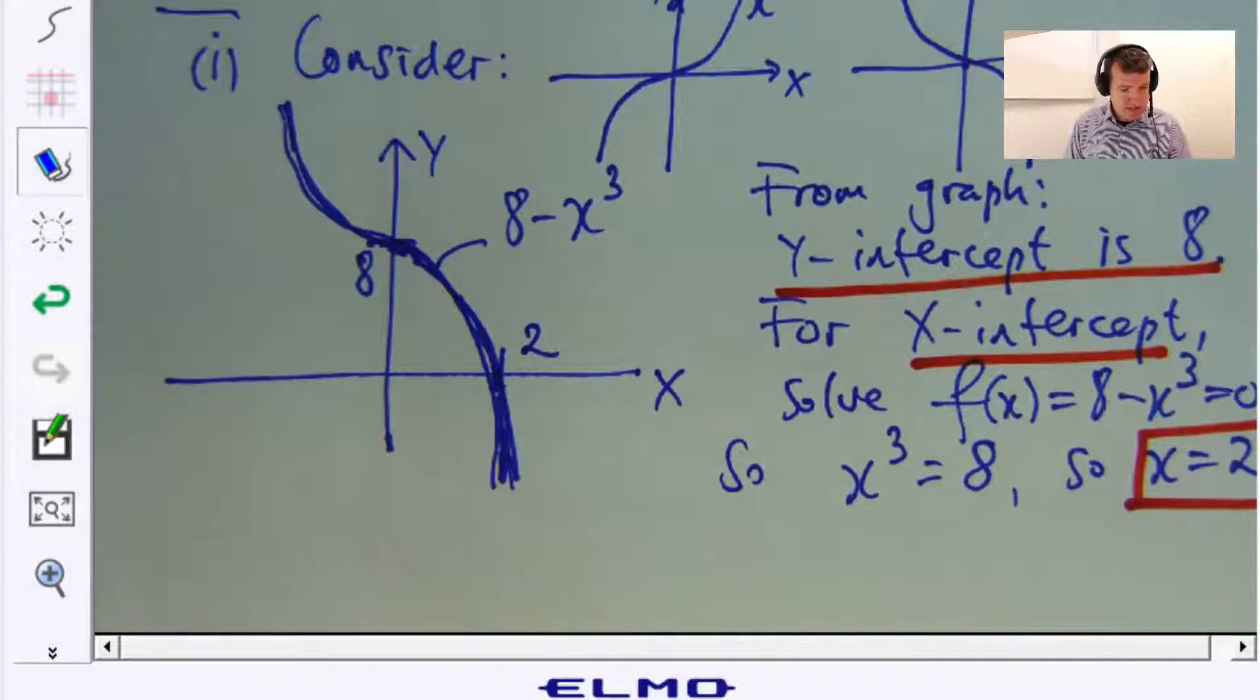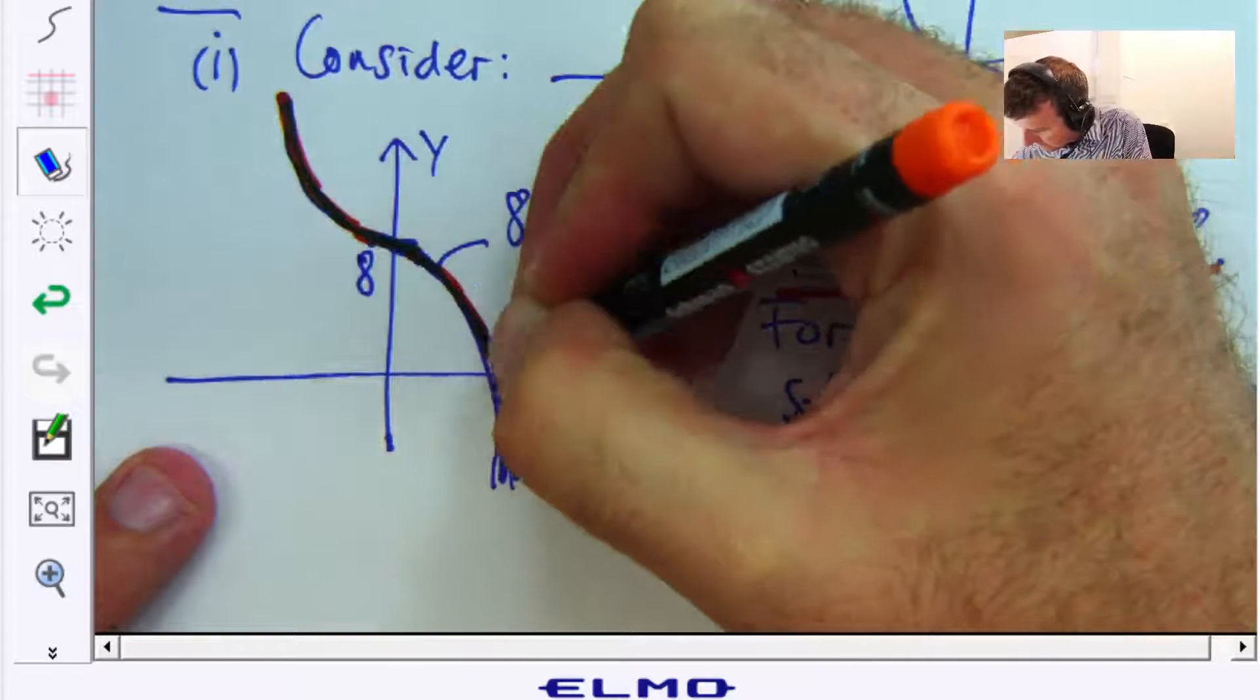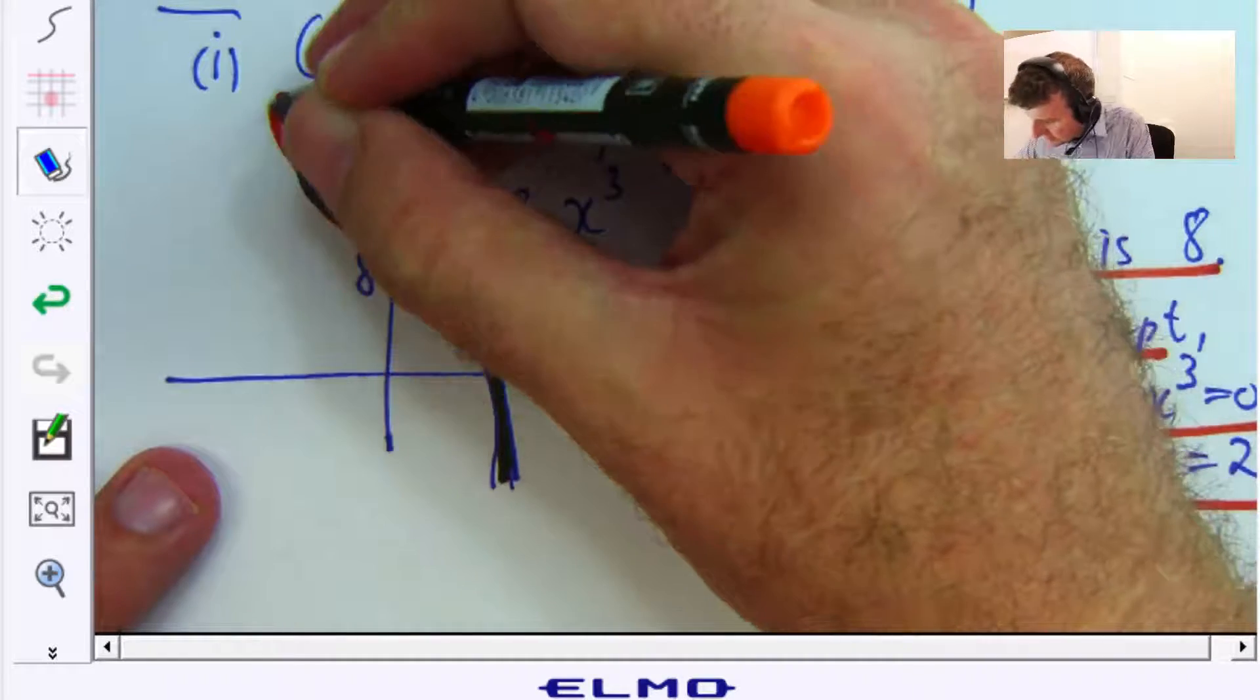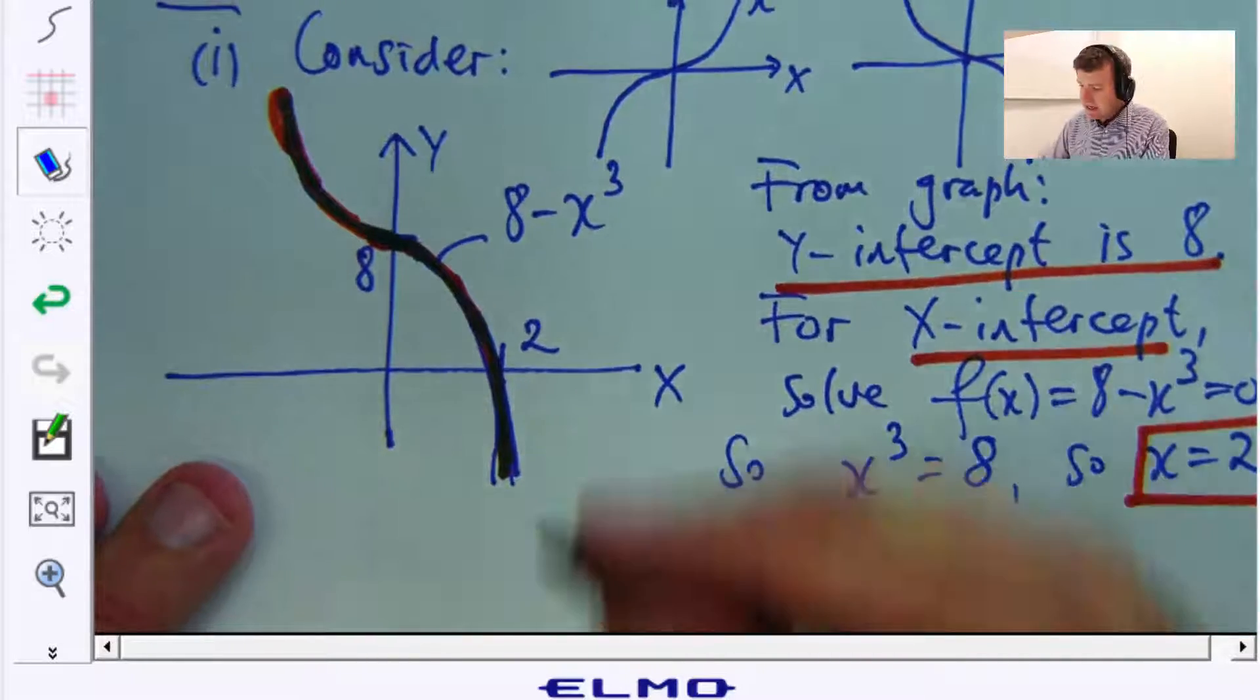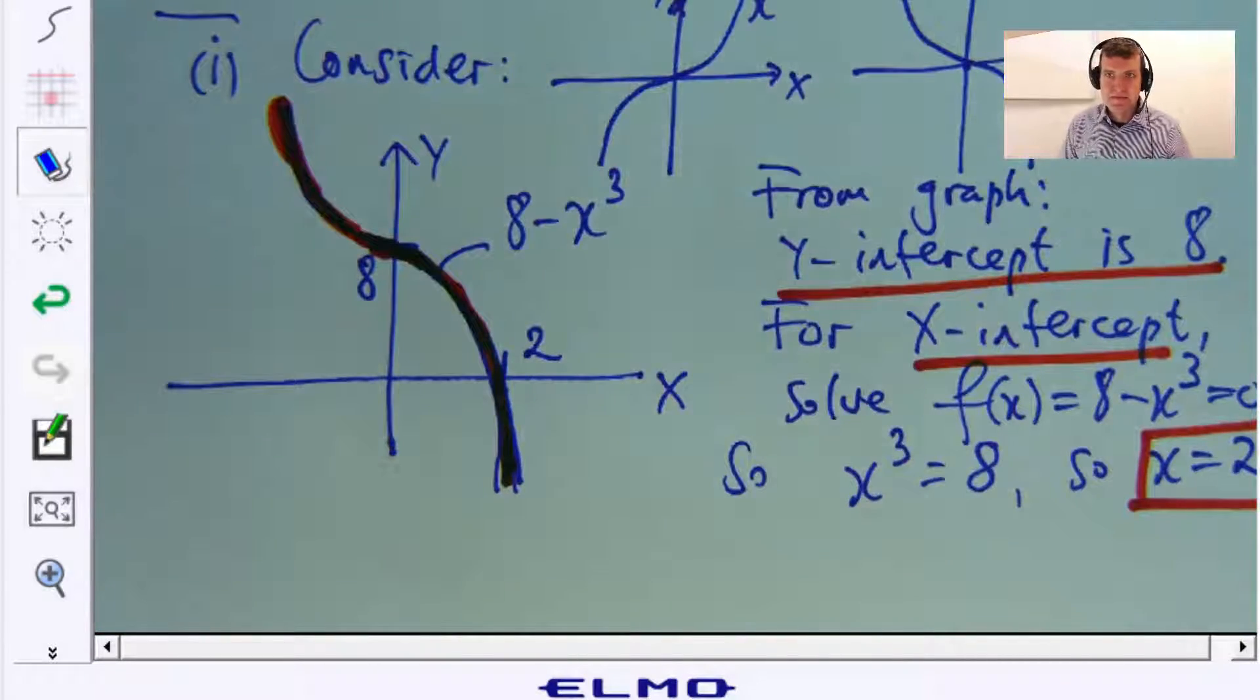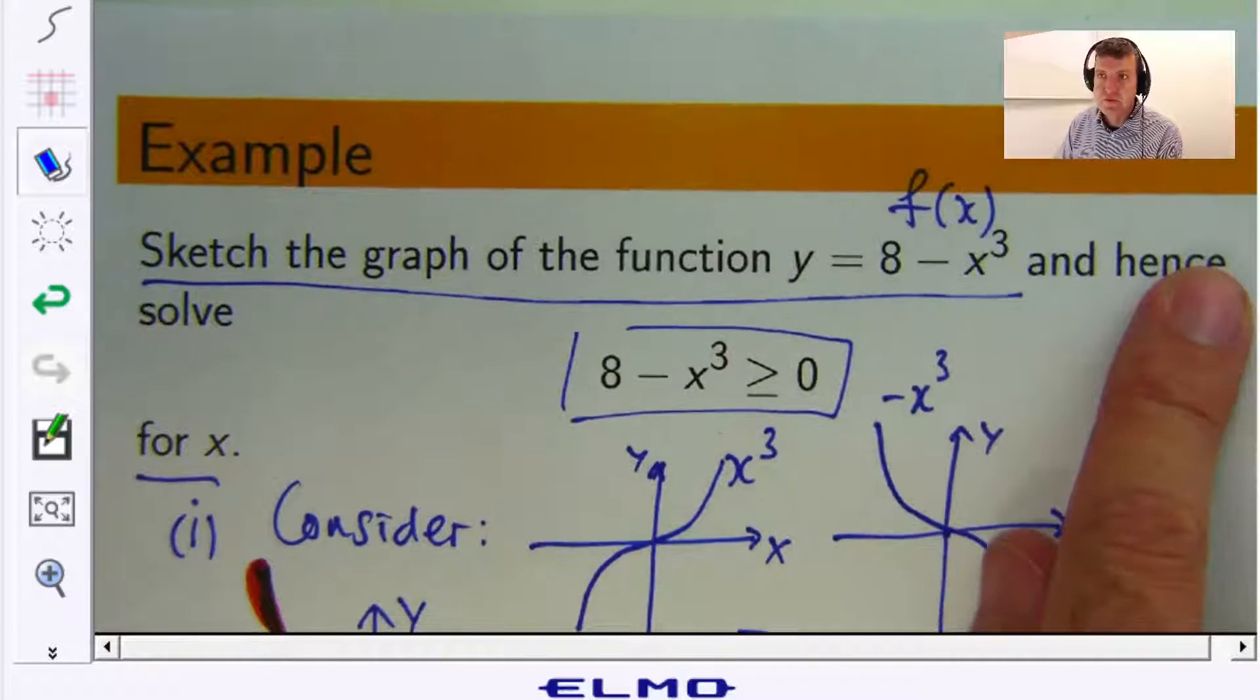So my graph then, my very chunky thick graph will look something like that. So this goes off to infinity, this goes off to infinity, and that's our graph. So that is the first part of our problem solved.